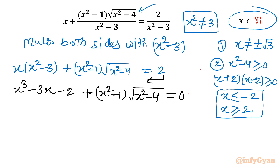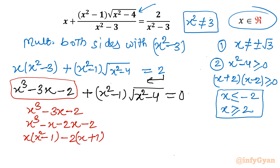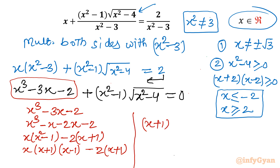Now I'll factor the cubic expression x³ - 3x - 2 separately. I split -3x as -x - 2x, then take x common from the first two terms to get x(x² - 1), and -2 common from the last two to get -2(x + 1). Applying the difference of squares: x(x+1)(x-1) - 2(x+1). Taking (x+1) as overall common factor gives (x+1)[x(x-1) - 2] = (x+1)(x² - x - 2).